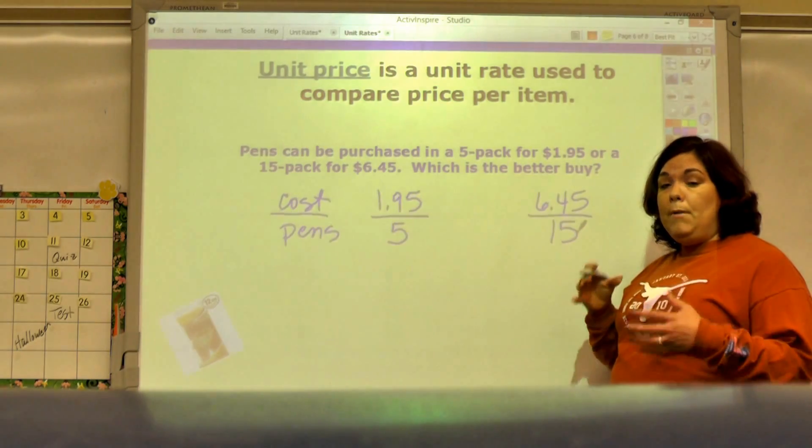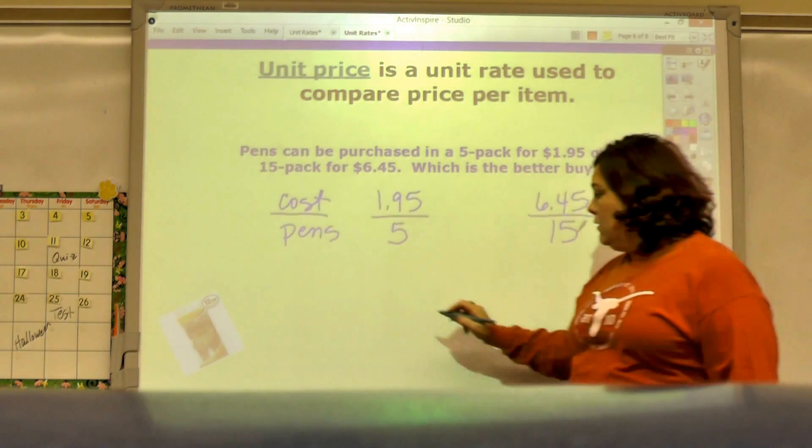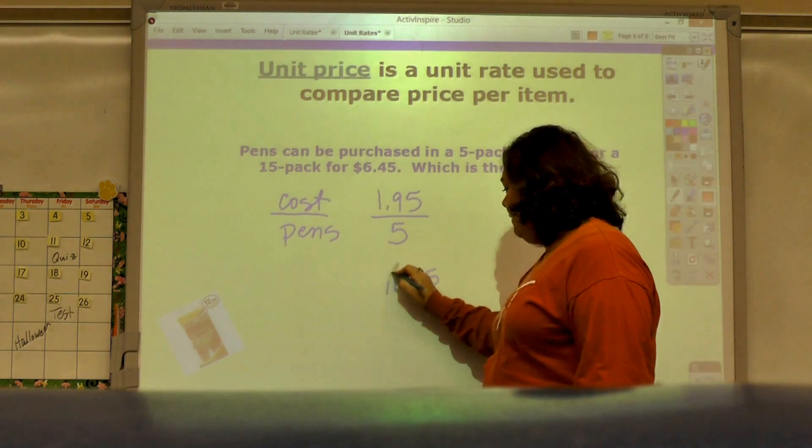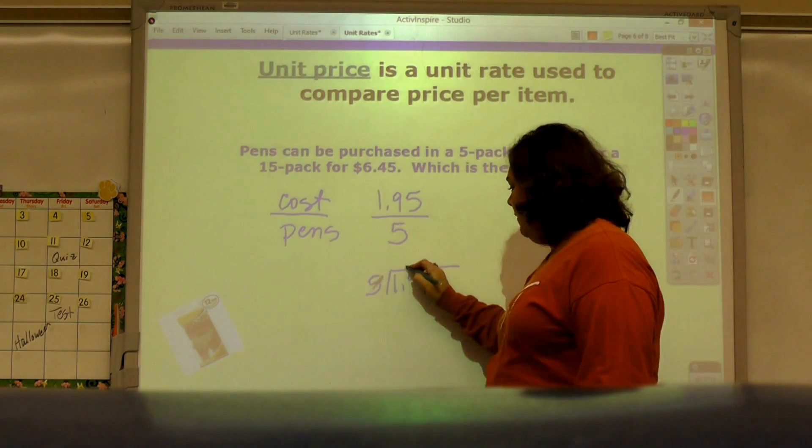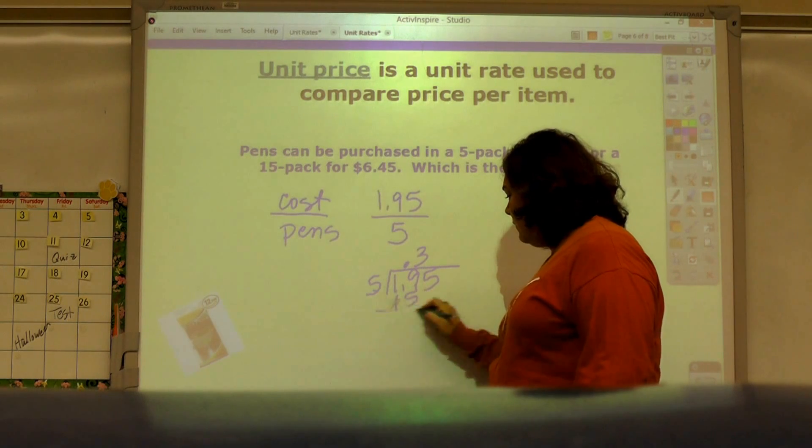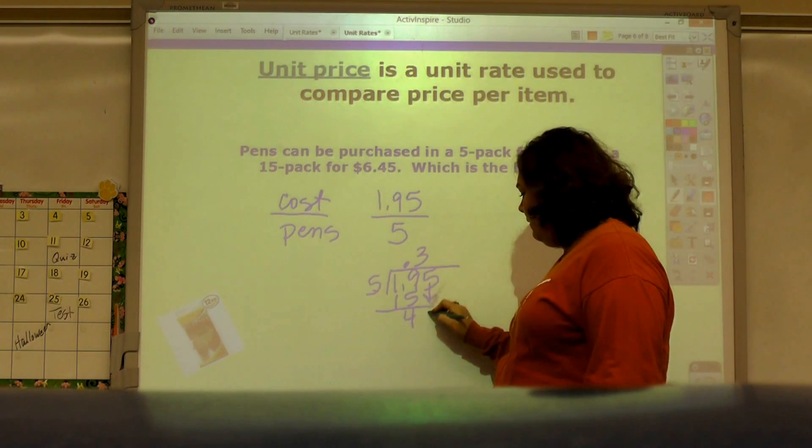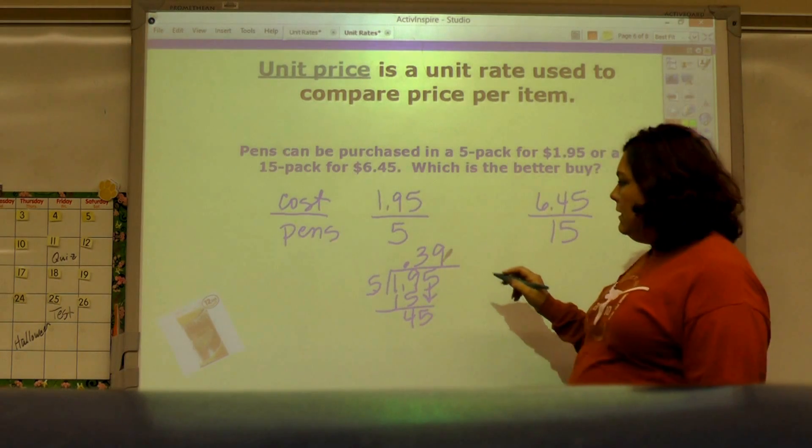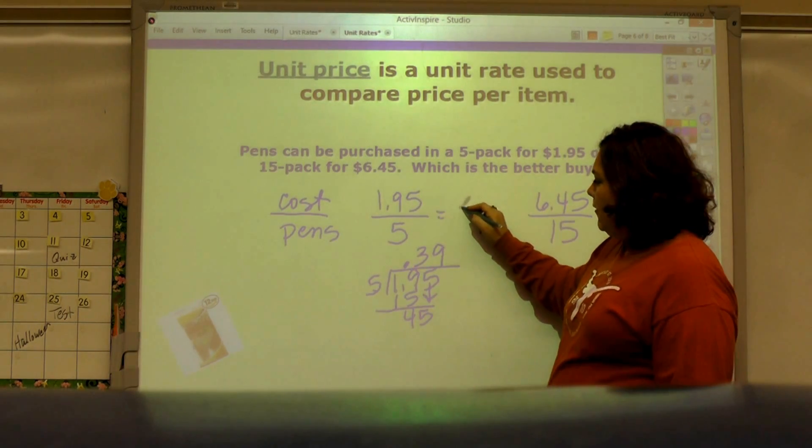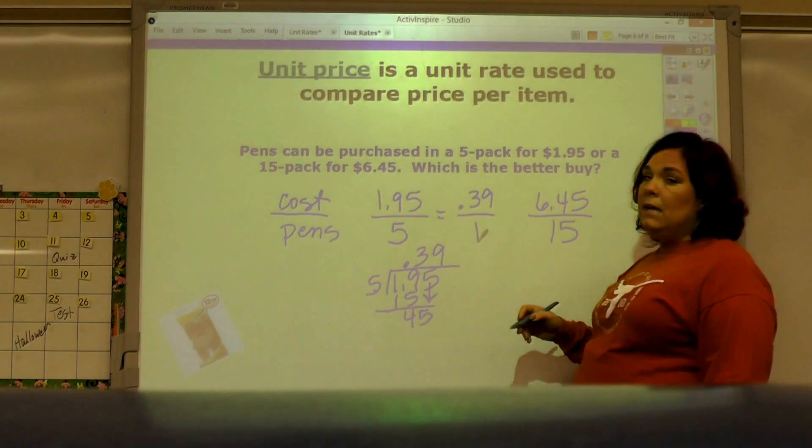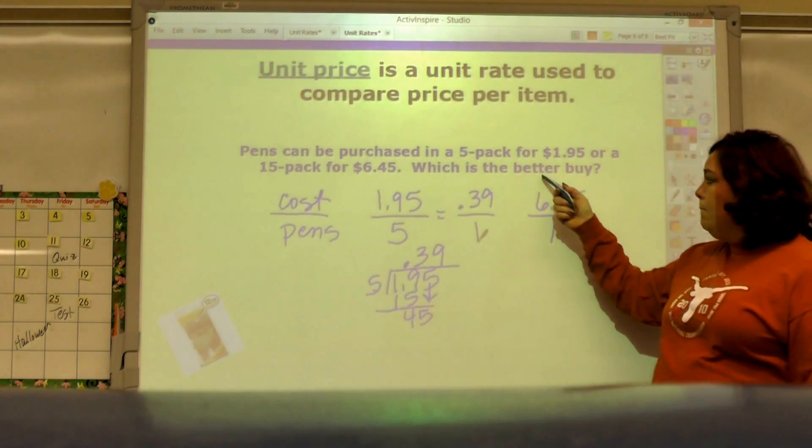To get a unit rate I need to divide each of these, so it's two problems and then I'm going to compare the answers. If I start this one, 1.95 divided by 5, 5 goes into 19 three times, bring down the 5, 5 goes into 45 nine times. So my answer is 39 cents for one, but that's not what it's asking me.